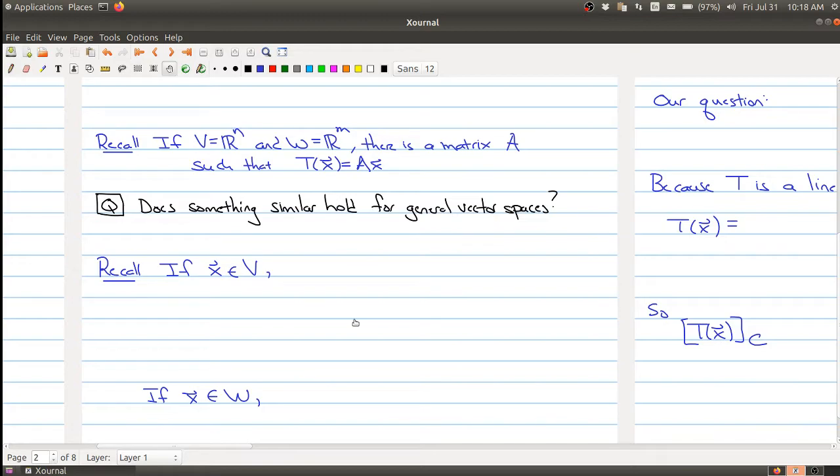What we're going to use is the b-coordinate information to get this information. Just remember that if you take x inside of V, because we have a basis b, we can write x in terms of our basis uniquely: r1*b1 up to rn*bn.